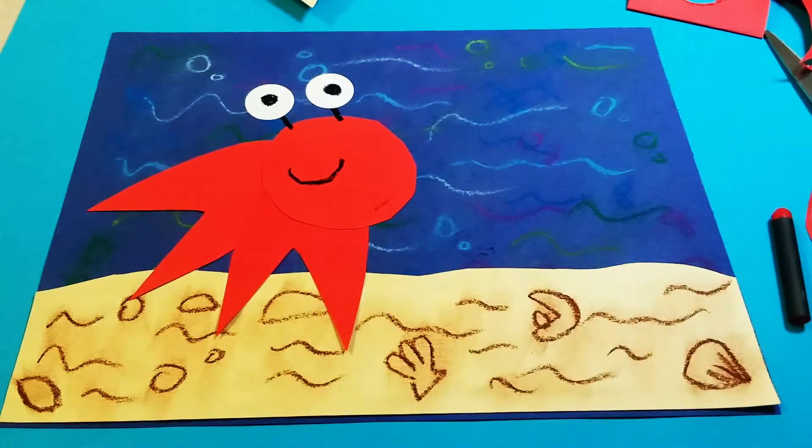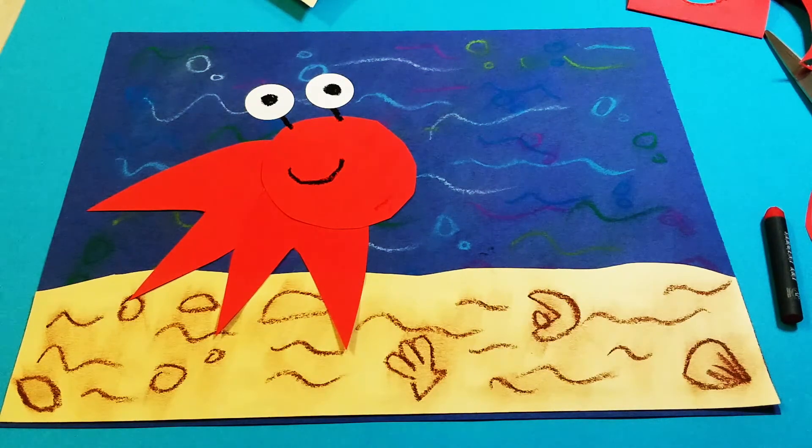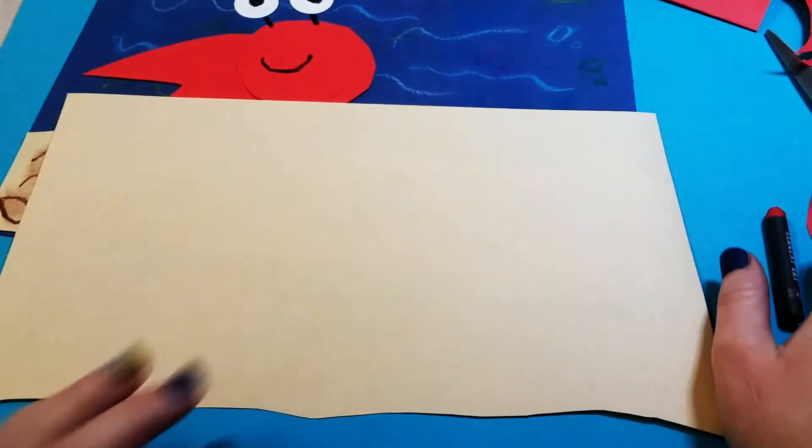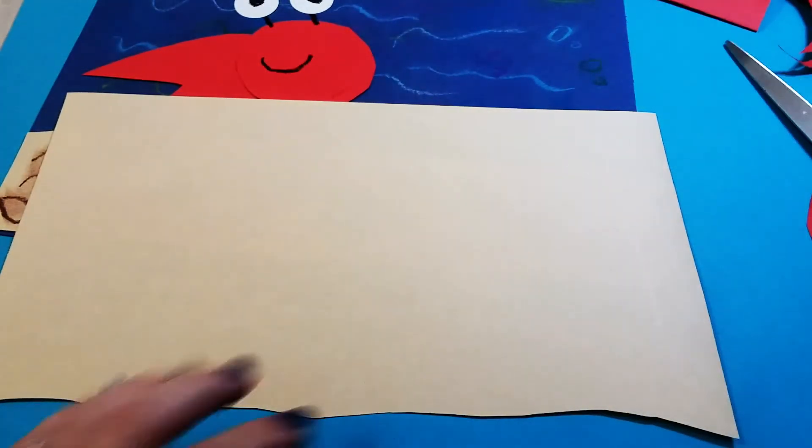All right, so our hermit crab is all done, right? Oh no, he's missing a home. So let's make him a home. We're going to go back to that tan sheet of paper and I want you to get your brown oil pastel again.